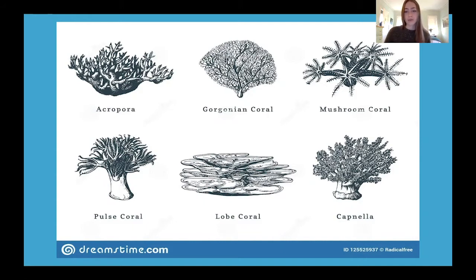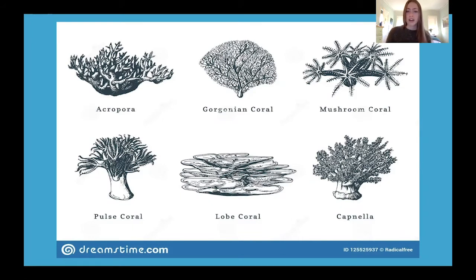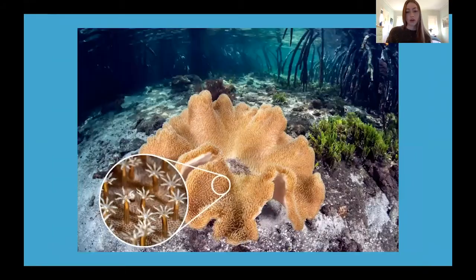Coral are really important for recycling carbon, nitrogen, and other nutrients, as well as protecting our coastlines and providing habitat and shelter for ocean organisms. And although coral looks like a plant, it's actually made up of animals called polyps.